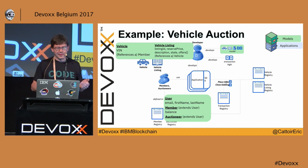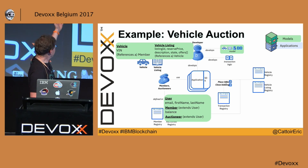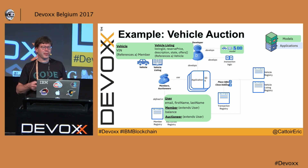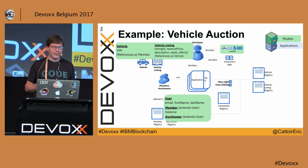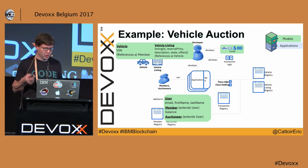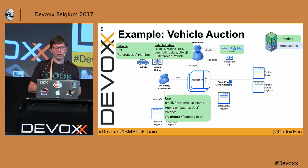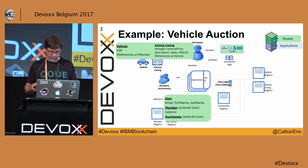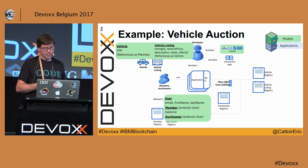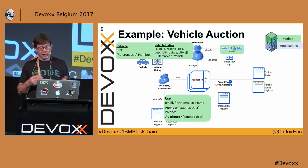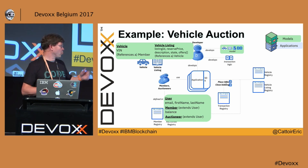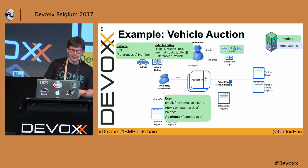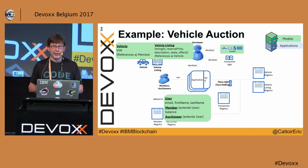The entities that play a role in this example will be the vehicle, identified by its unique identification number, and the vehicle listing, which describes the state, color, type of car, and all information useful for people wanting to buy. We also need to model the participants: the members, who are the people either selling or buying cars, and then the governor of the whole thing — the auctioneer.